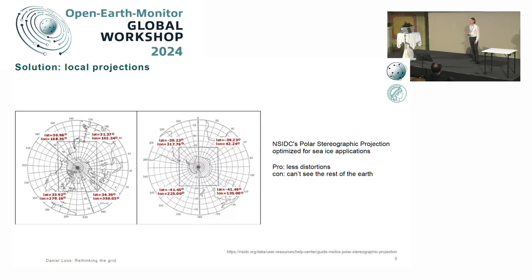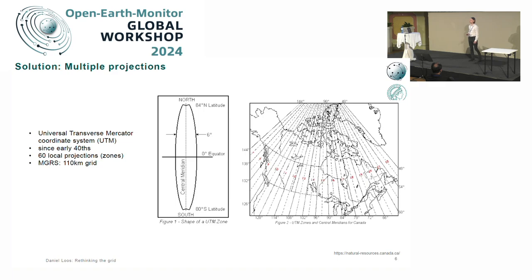One solution might be to use local projections. They have been used quite extensively in the past, especially by polar scientists, because in traditional projections distortions are highest next to the poles. But we are the Open Earth Monitor project and we want to do something at global scale. So another approach is to use multiple projections instead. It's been around since World War II, and the idea is to basically distribute the Earth into different zones and make a local projection based on each zone.